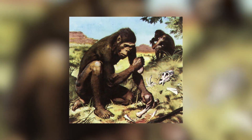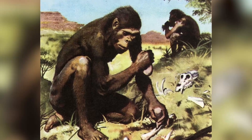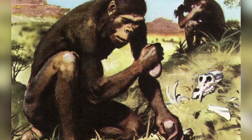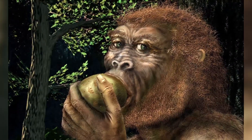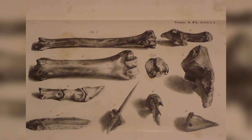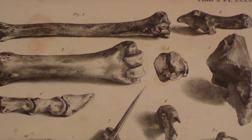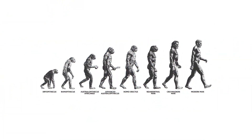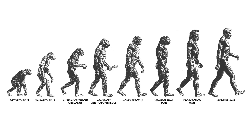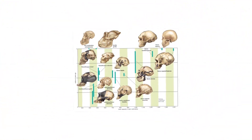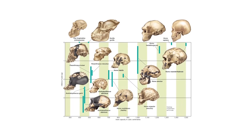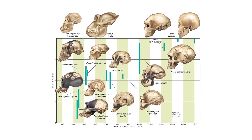2 million years ago, Australopithecines probably lived in East African grasslands. Evidence shows they hunted with stone weapons but essentially ate fruit. Some of the bones discovered were different — this creature was called the first human-like hominid and was named Homo habilis. Their brain capacities were between 650 to 800 cc. They probably did not eat meat.